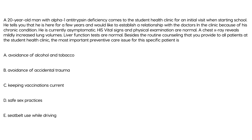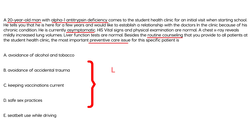Clinical vignette: a 20-year-old man with alpha-1 antitrypsin deficiency comes to the student clinic. He is asymptomatic with normal vitals, mildly increased lung volumes on chest X-ray, and normal liver function tests. The most important preventive care issue for this patient involves the two main organs affected — lung and liver — so the answer is no smoking and no alcohol.